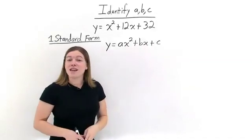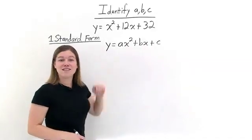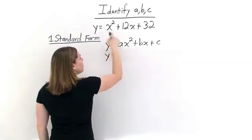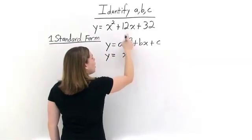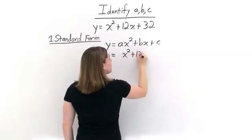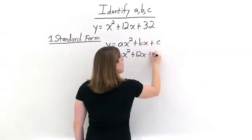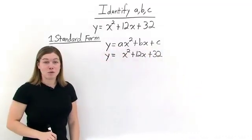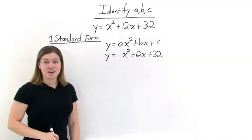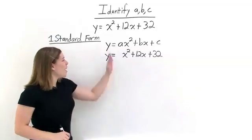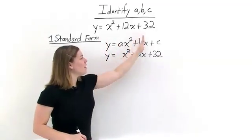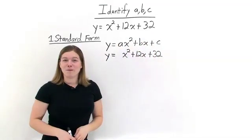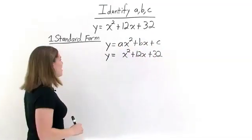So now let's see if our quadratic equation is in standard form. We'll rewrite our equation: y equals x squared plus 12x plus 32. Is our equation in standard form for a quadratic equation? Yes, it is. We have y equals x squared, x, and our constant. We're in standard form, which means we can find a, b, and c easily.